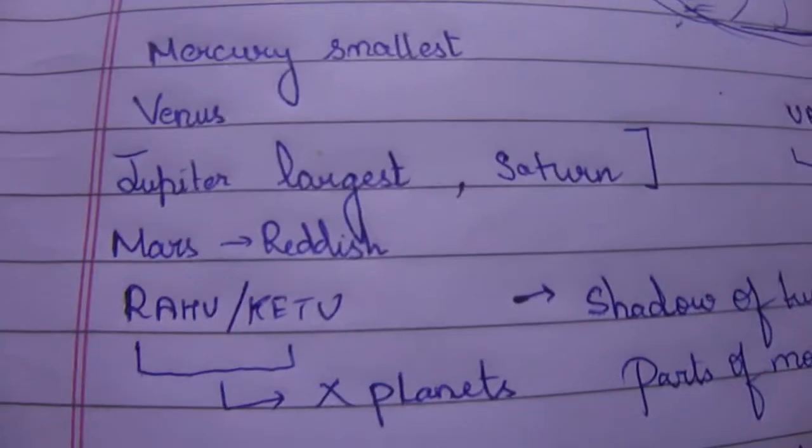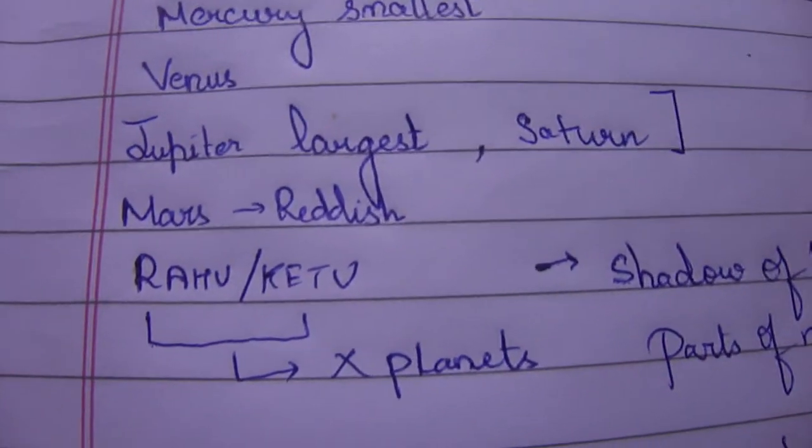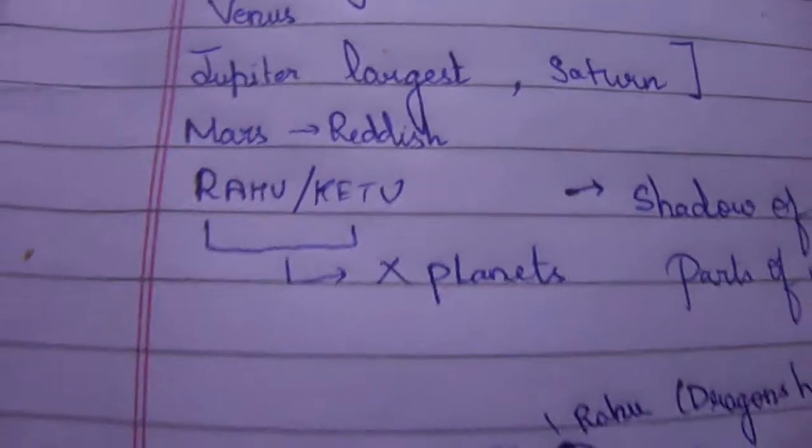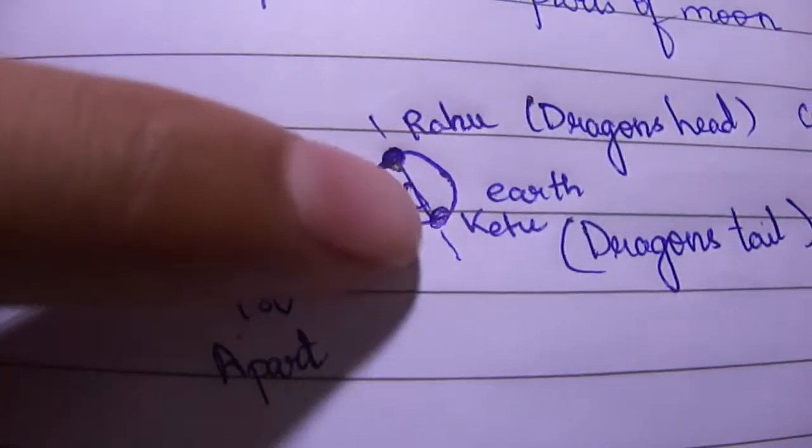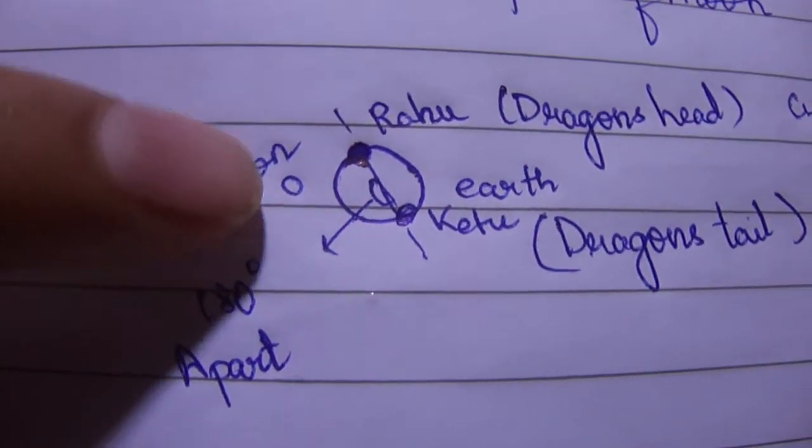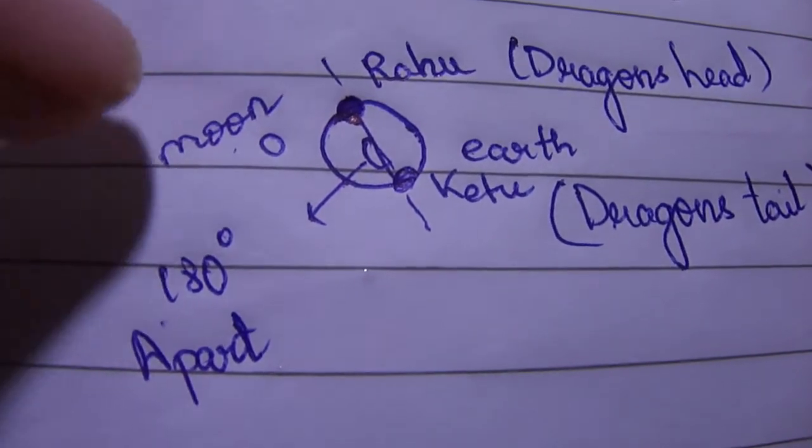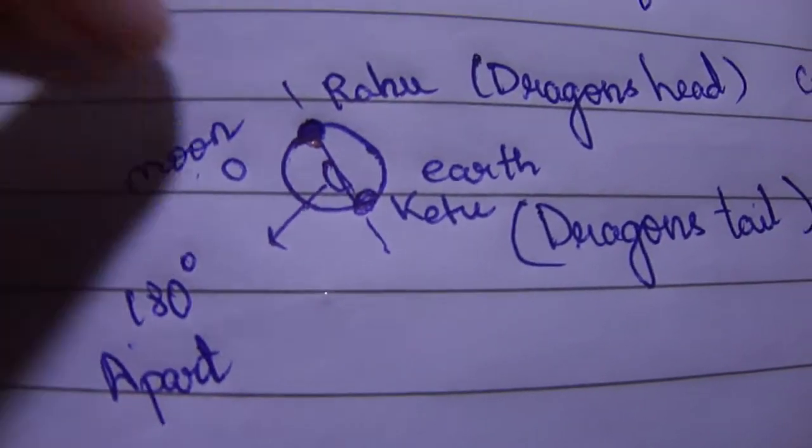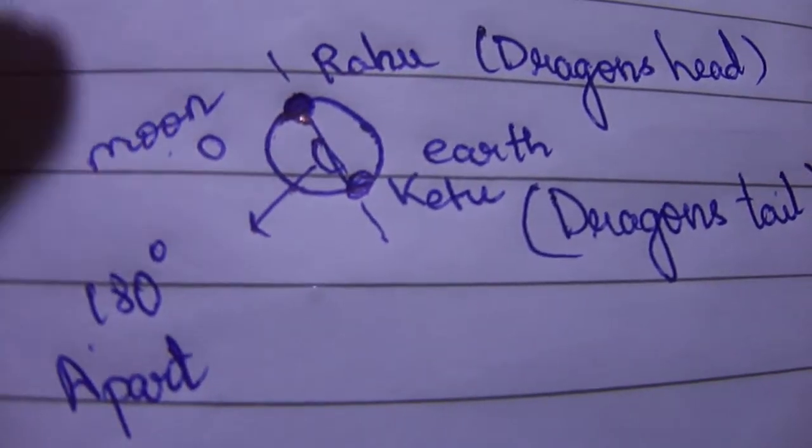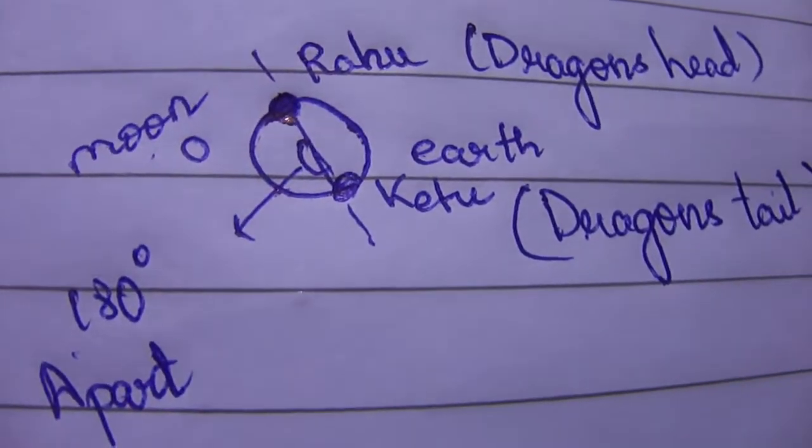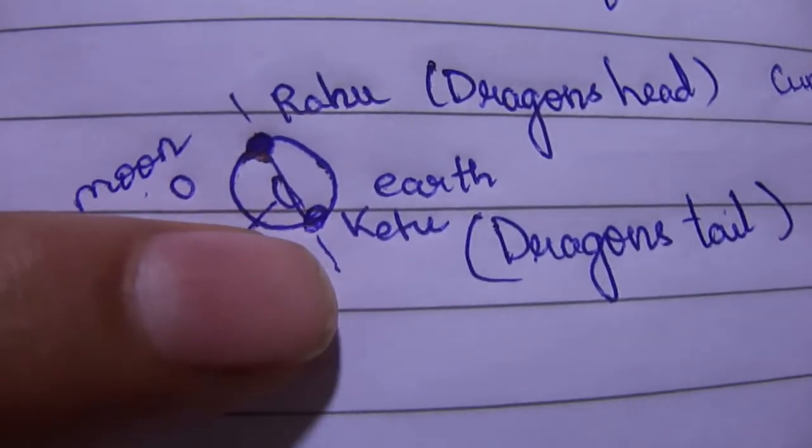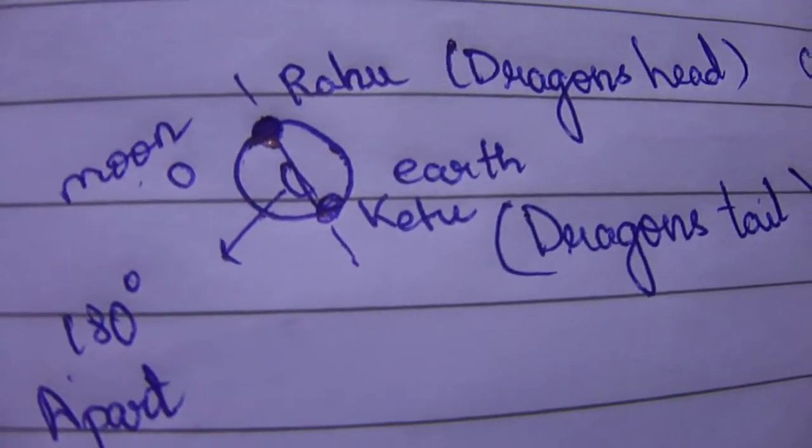How is it determined? Imagine this to be the Earth and this to be the Moon. When the Moon approaches the northern part of the Earth, that point right above the northern part is referred to as Rahu, whereas the southern part is referred to as Ketu.